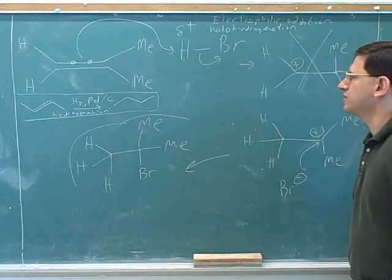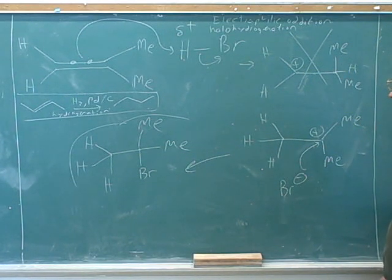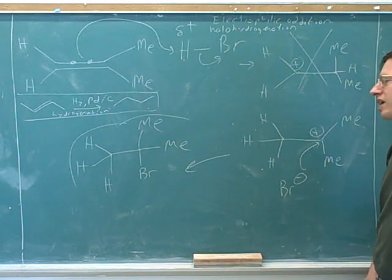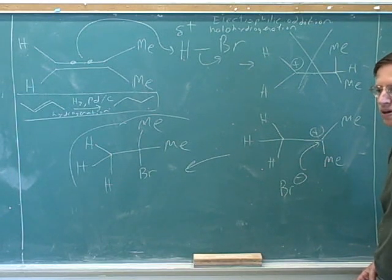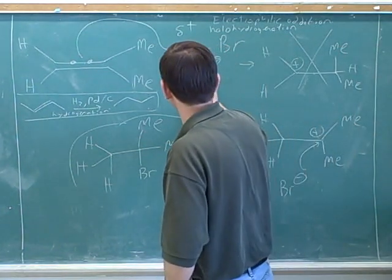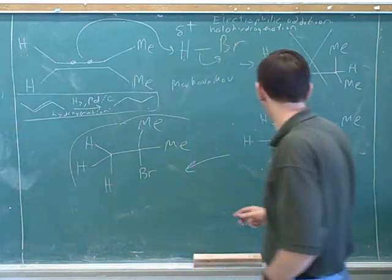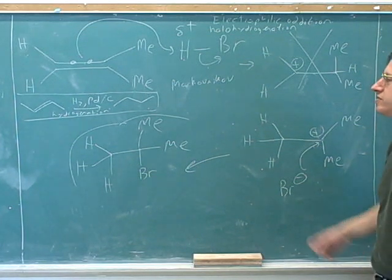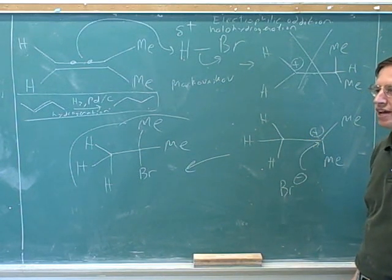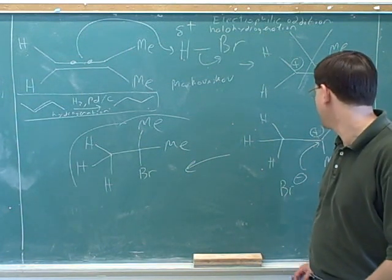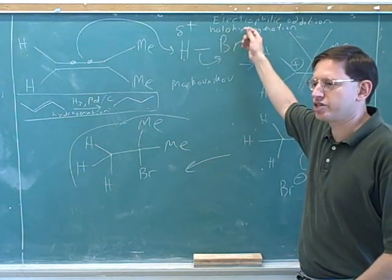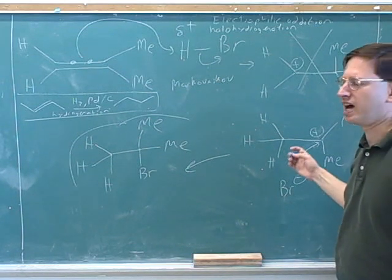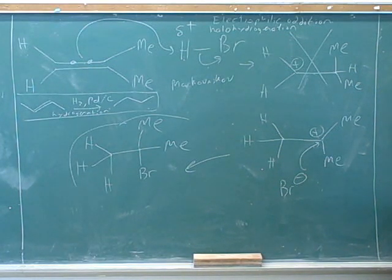The key thing here is the regiochemistry. The halogen ends up on the more substituted atom — that's Markovnikov selectivity. You just have to have that memorized: when the halogen ends up on the more substituted carbon, that's Markovnikov. So the synthetic utility of halohydrogenation is: if you want to place the halogen on the more substituted carbon, this is the reaction to use. If you want the halogen on the less substituted carbon, you'd need a different mechanism — that's anti-Markovnikov.